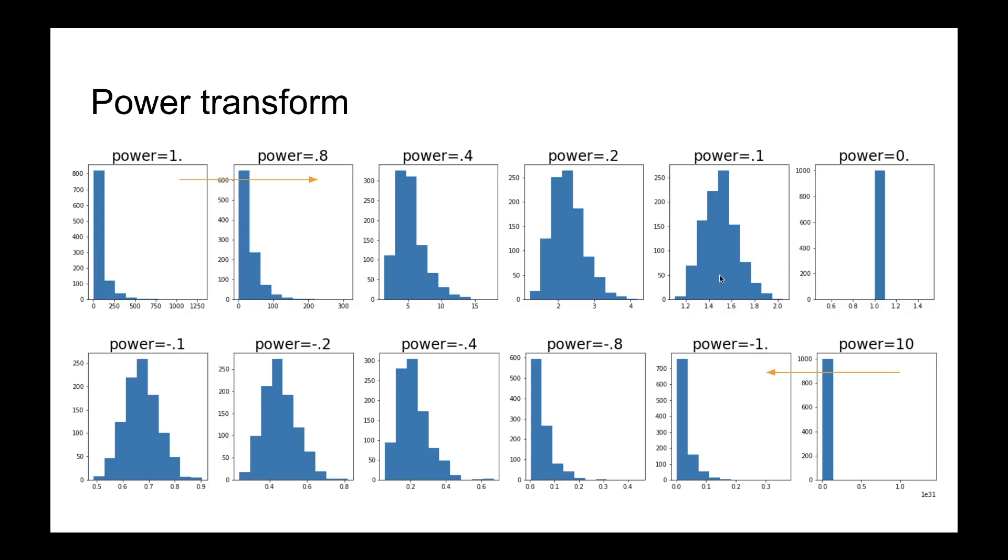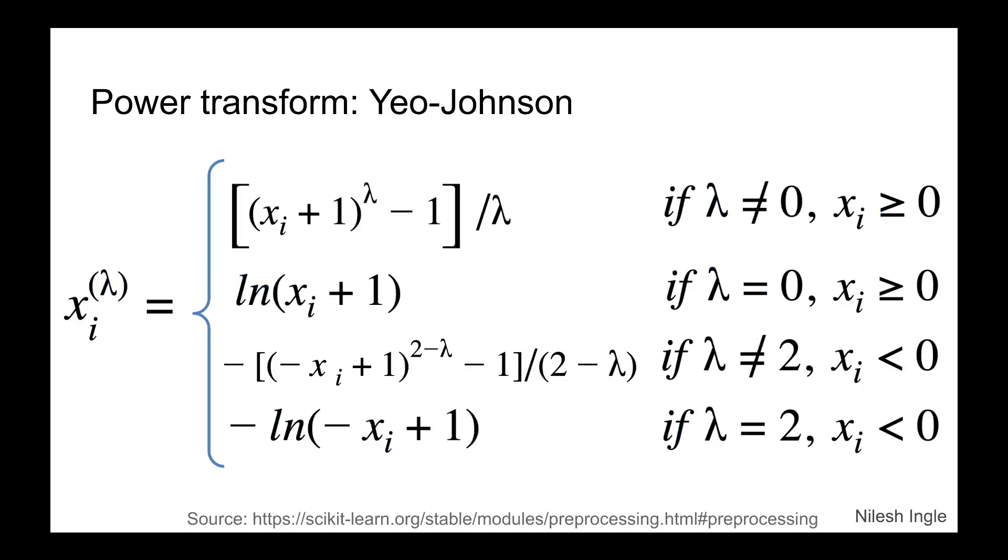And similar to this, we can raise it to a negative power as shown here. And for negative 0.1, again we still are close to normal distribution. However, as we go further away, then we are going back to that right-tail distribution that we started with. So that's essentially a way to visualize how the power transform works in the background.